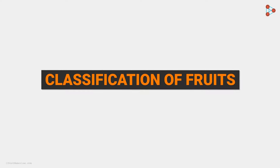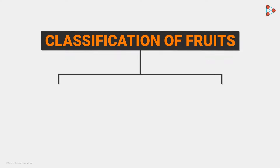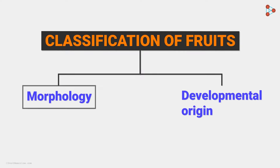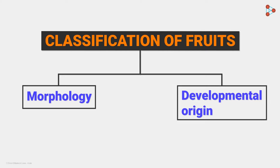Classification of fruits can be done in a variety of ways. We will have a look at the two major ways of classifying fruits: the first based on the morphology of the fruit, and the second based on the part of the plant from where the fruit develops. Let us begin with each one by one in the next part.